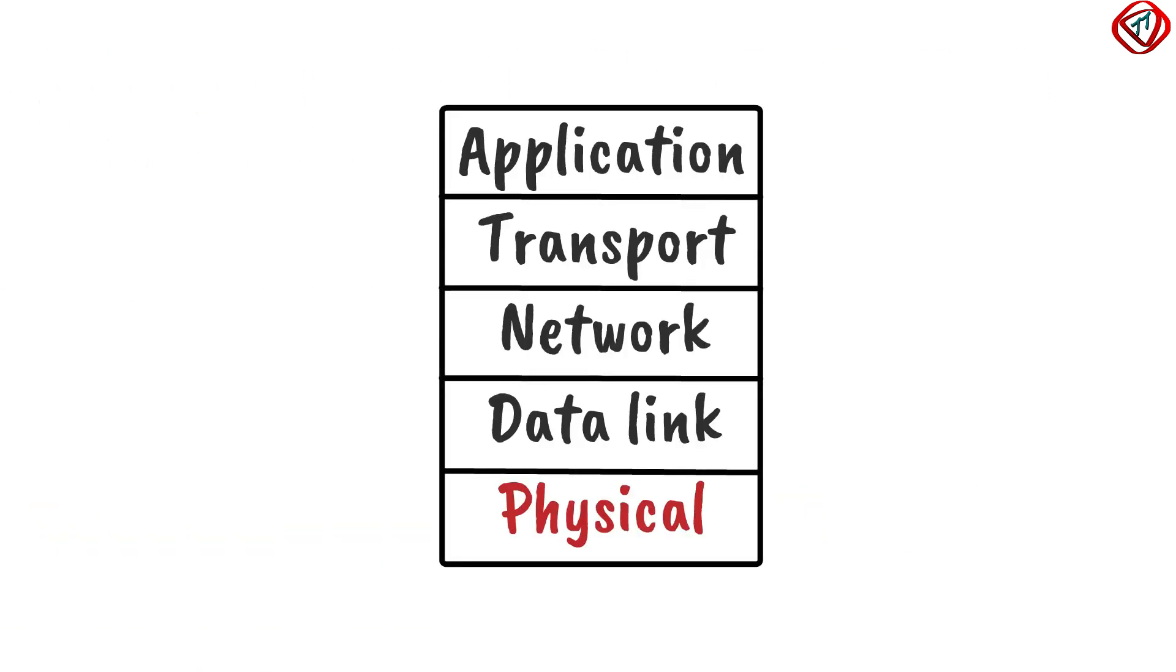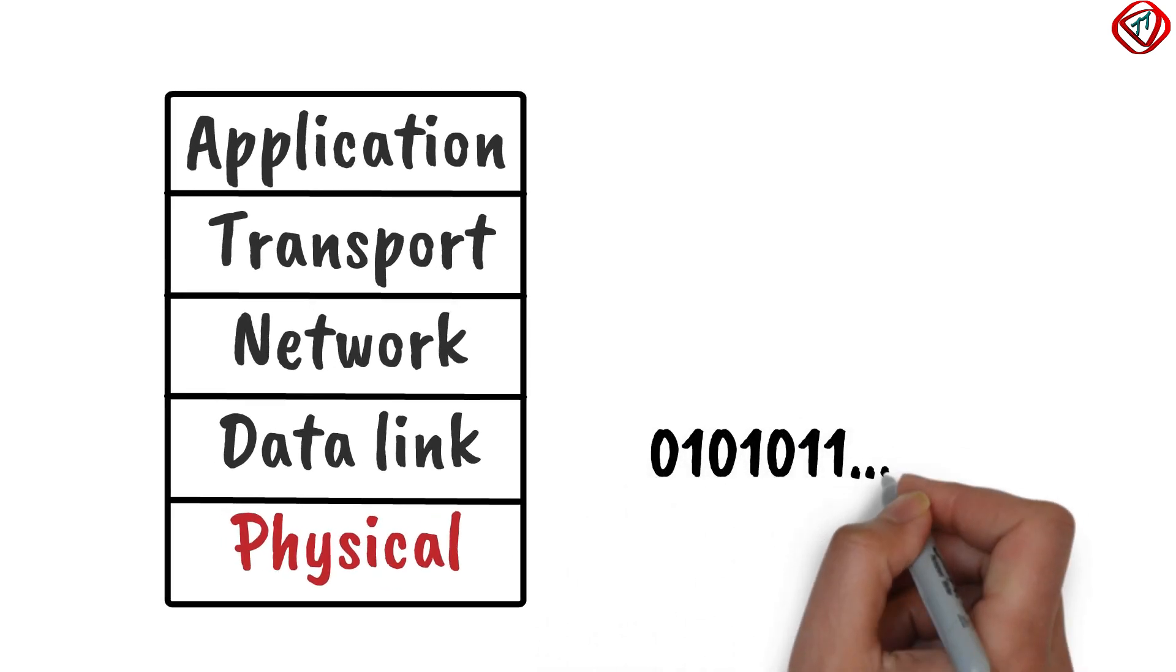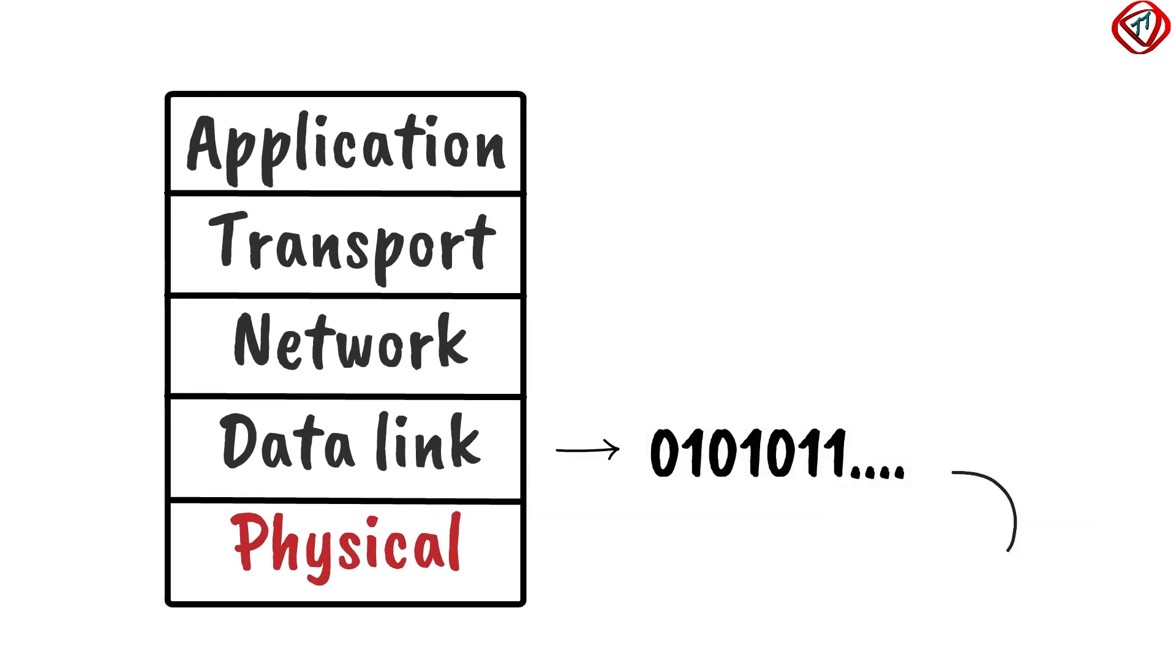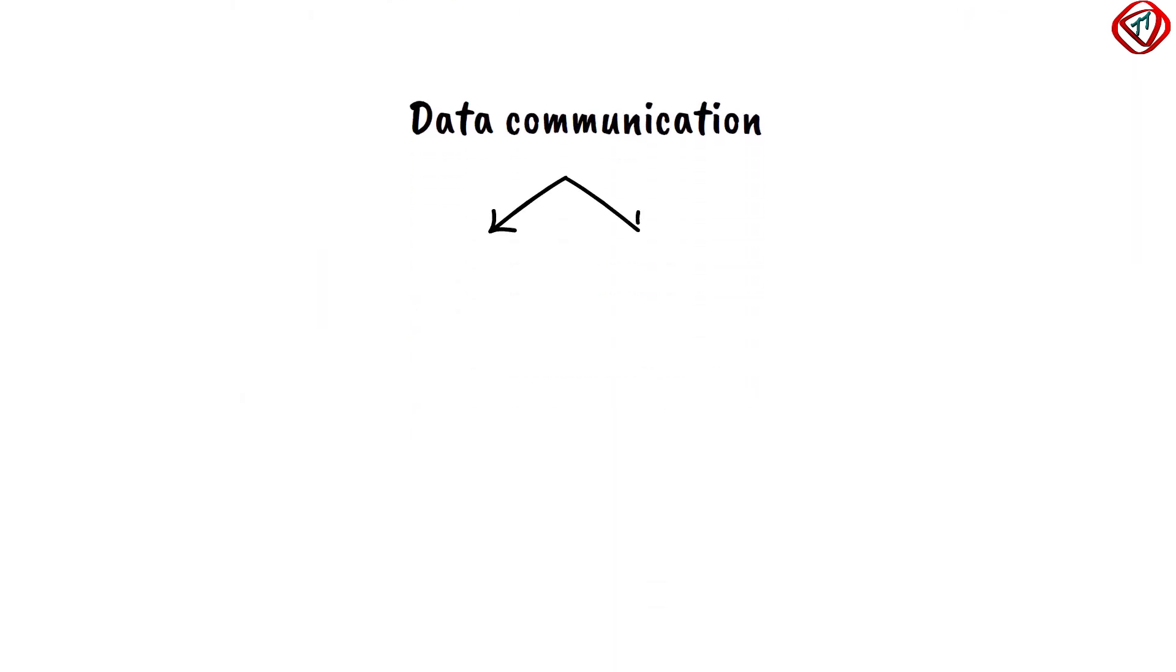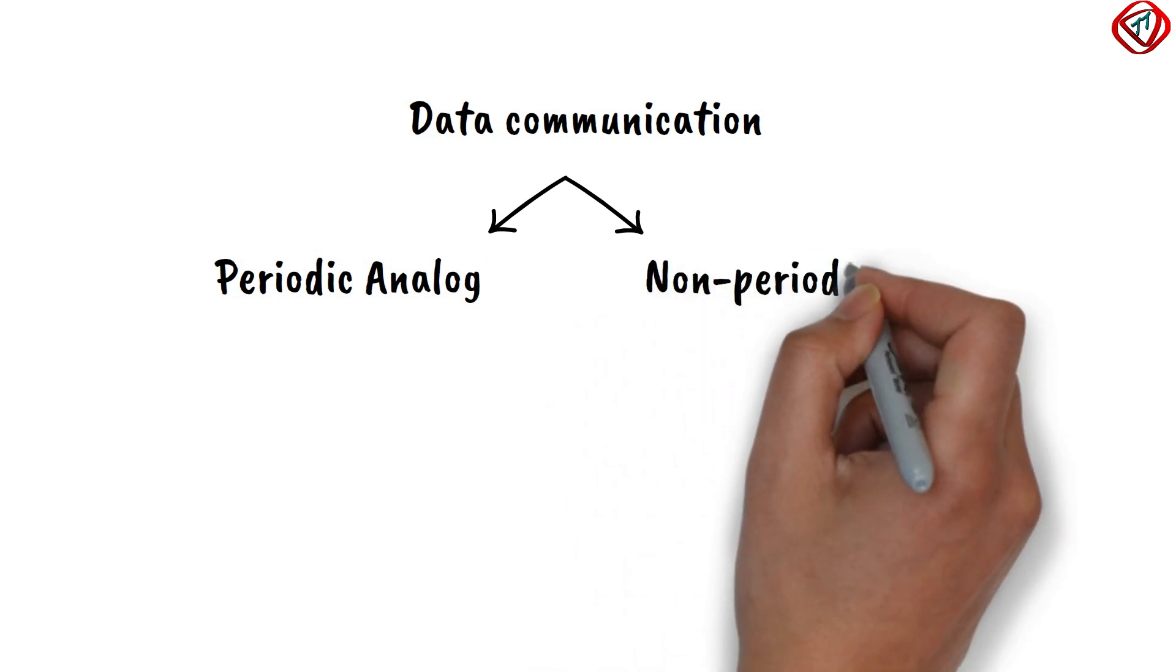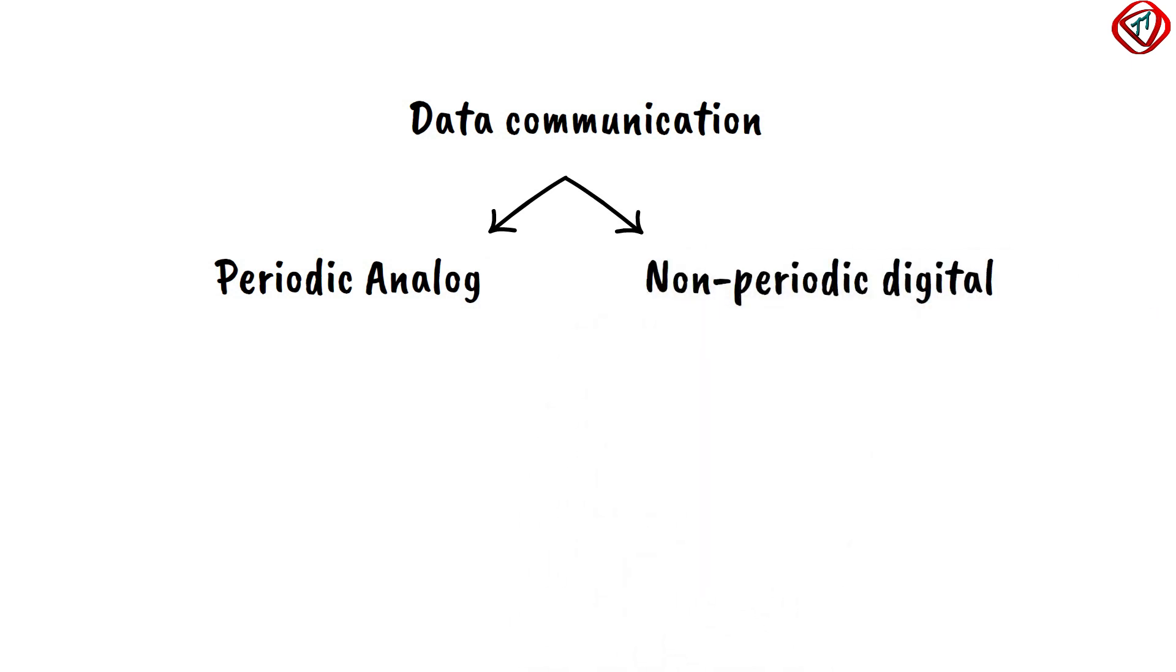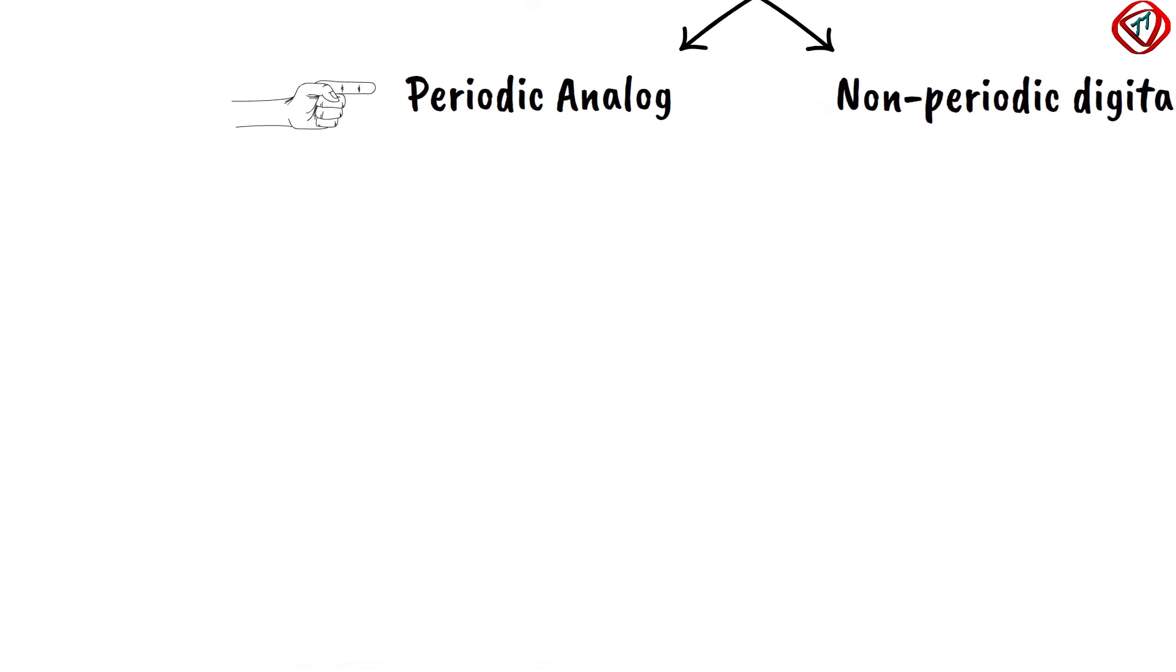The physical layer in the TCP IP protocol suite converts data received from the data link layer to signals. In data communication, we commonly use periodic analog signals and non-periodic digital signals. Let us discuss periodic analog signals in detail.